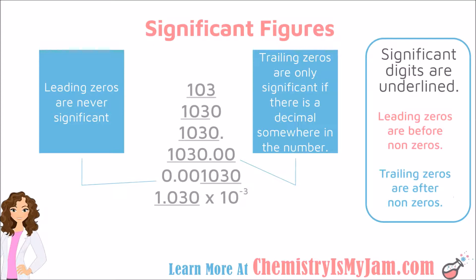You're going to find that there will never be a gap in your significant figures — they'll be connected together. In this example, the 1 and the 3 are significant because they are non-zeros. This zero is between them, so it is significant. This is a trailing zero. Trailing zeros are only significant if there is a decimal somewhere in the number. The way it is written here, there are only three significant figures. The way it's written in the example below, there are four significant figures because there's a decimal in the number.